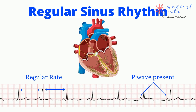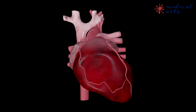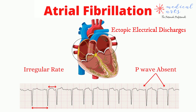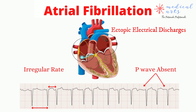Now that you understand the normal mechanism of the heart's electricity, let's see what can go wrong. In the case of atrial fibrillation, the heart starts generating chaotic, non-coordinated impulses from multiple abnormal regions within the atrium, which we call ectopic electrical discharges.